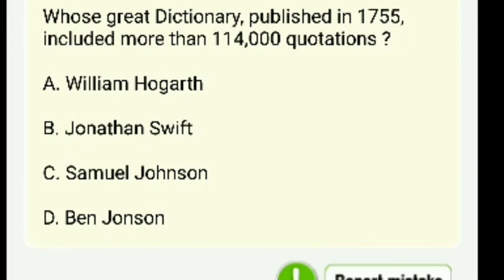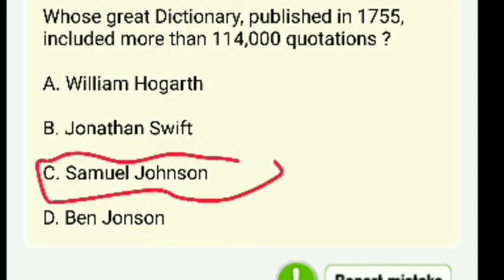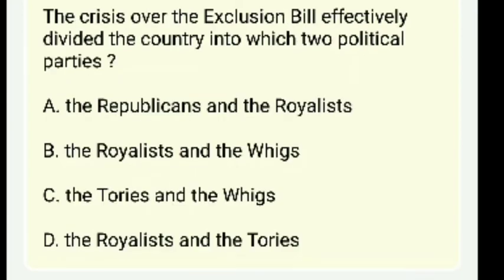Whose great dictionary published in 1755 included more than 114,000 quotations? The answer is Samuel Johnson. The crisis over the Exclusion Bill effectively divided the country into which two political parties — the Tories and the Whigs. One was supportive of the king and the other of parliament.